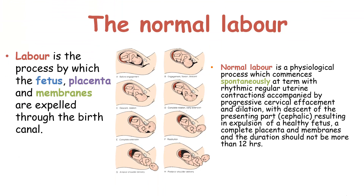Generally, labour is the process by which the fetus, placenta and membranes are expelled through the birth canal. But when defining normal labour, we say it is a physiological process which commences spontaneously at term with rhythmic regular uterine contractions, accompanied by progressive cervical effacement and dilation, with descent of the presenting part — that is usually the head or the cephalic part — resulting in the expulsion of a healthy fetus, a complete placenta and membranes. The duration should not be more than 12 hours.